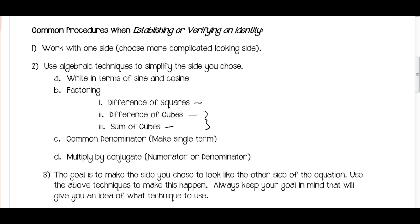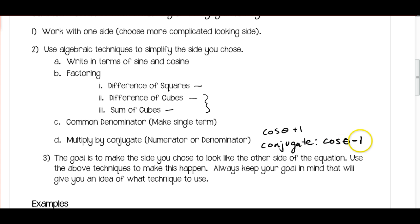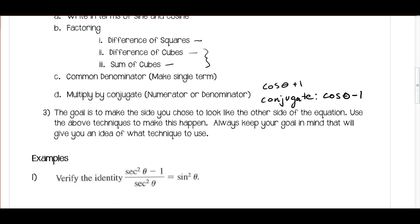Another technique is multiplying by conjugates — you could multiply either the numerator or the denominator by its conjugate. For example, if I have cosine theta plus 1, the conjugate is going to be cosine theta minus 1. The goal is to make the side you choose look like the other side of the equation. Use as many techniques as you need, and always keep your goal in mind — that will give you an idea of what technique to use.